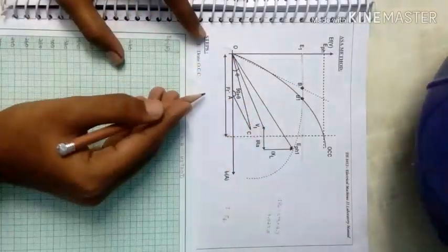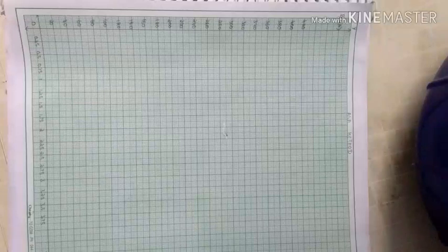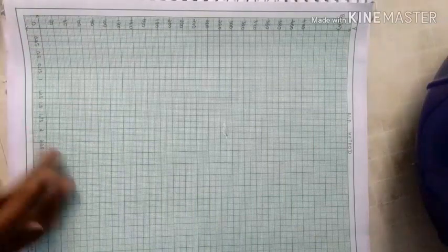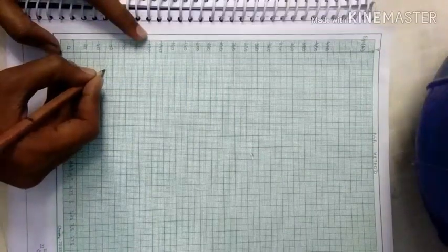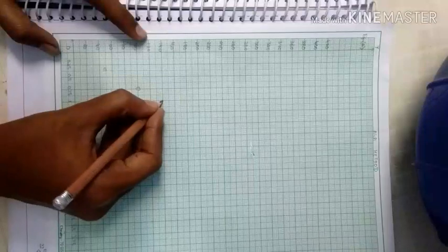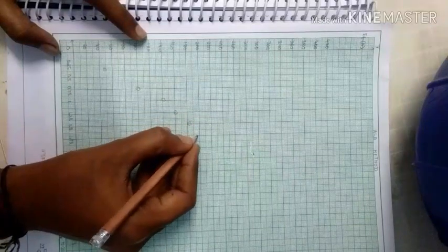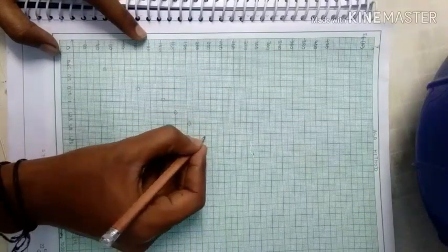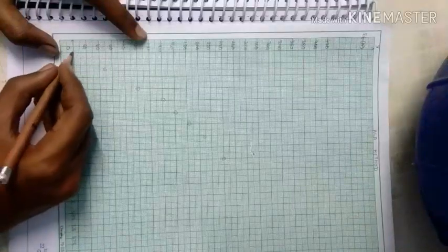As we see in the model graph, this graph is a relation between IF and EF. So take the y-axis as EF and x-axis as IF. As we did in the ZPF method, just do the same. First we have to plot the OCC characteristics, y-axis as EF. Now join all the points.